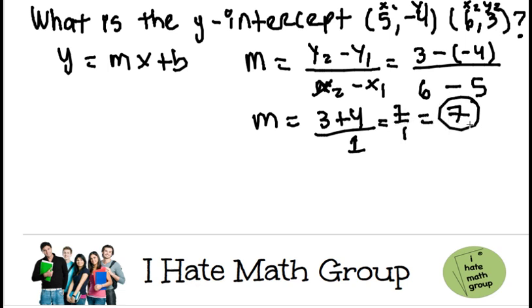Beautiful. I already have my m. Now, I have my slope and I know that y is equal to mx plus b. Go ahead and just pick any point that you want, either 5 comma negative 4 or 6 comma 3.